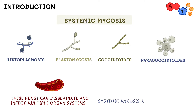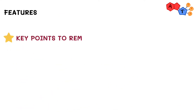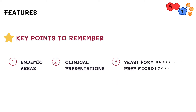Systemic mycoses are dimorphic, which means they exist as molds at cooler temperatures and as yeasts at warmer ones. Remember: mold in the cold, yeast in the heat. In other words, these fungi exist as molds in the environment, which is cold, but in human hosts they take the form of a yeast. The key points to take away from this video are the locations these fungi are endemic in, their clinical presentation, and their yeast form under potassium hydroxide prep microscopy, which will help confirm the diagnosis.